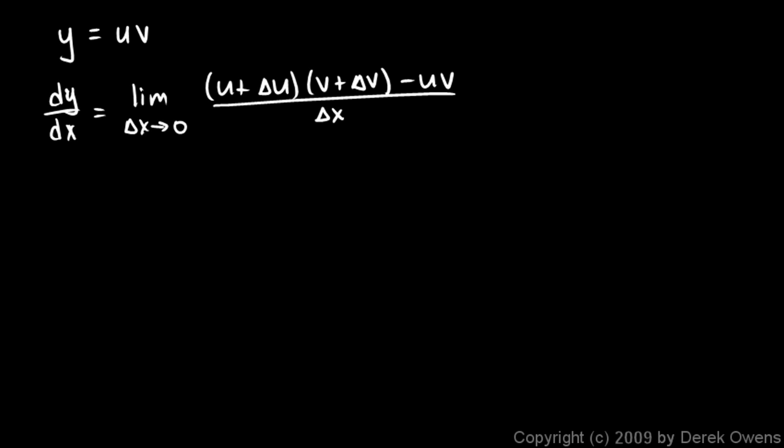Now to take the limit, let's try to simplify this a little bit. So let's work this out. We'll have the limit as delta x approaches 0, and we'll do a FOIL operation right here on that product of two binomials. And we get uv plus u delta v plus v delta u plus delta u delta v.